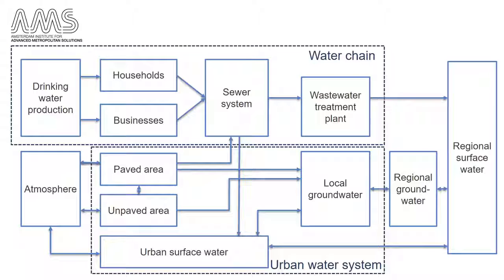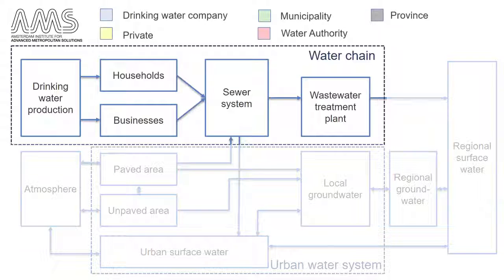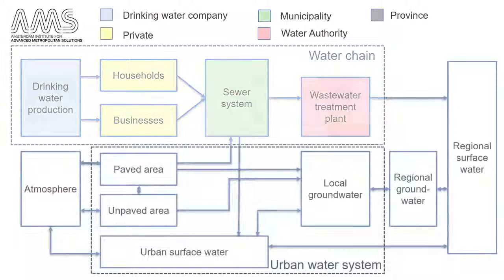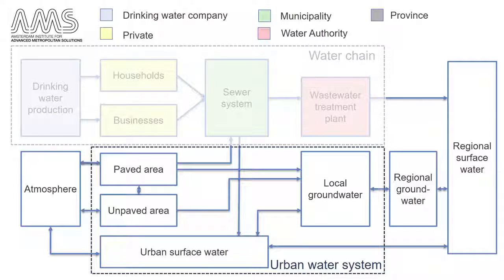This complexity is also reflected in the management of the water system. As we can see in the next slide, the different components of the water chain each have their own responsible manager. Imagine what that means for the management of the total flow, with each component having a different manager. The management of the urban water system is even more confusing. Parts of each system are managed by different organisations, and only via intensive cooperation between the various authorities, private parties and residents can an effective management of water quantity and water quality be achieved to the benefit of all stakeholders.